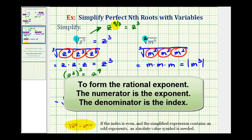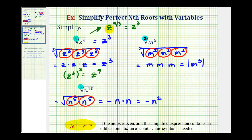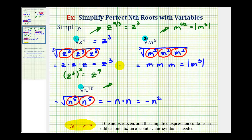But this shortcut only works when, number one, you've already been taught how to do this, and number two, only when this is a perfect nth root, meaning it simplifies perfectly. Looking at the second example, we could have written this as m raised to the power of six divided by two, which gives us m to the third very quickly — though we'd also have to include the absolute value. And for the last example, the other option would have been negative n raised to the power of ten divided by five, which gives us negative n squared.